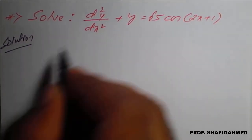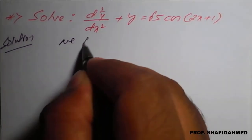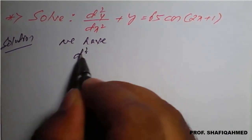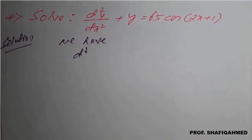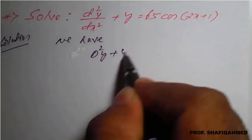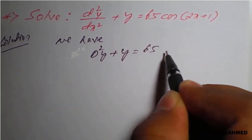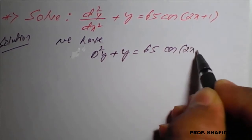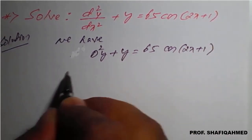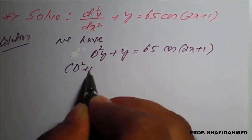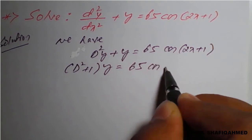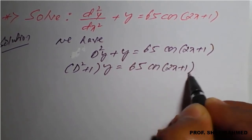The above equation we can write as: D²y + y = 65·cos(2x + 1). From the left-hand side, taking y common, we get (D² + 1)y = 65·cos(2x + 1).